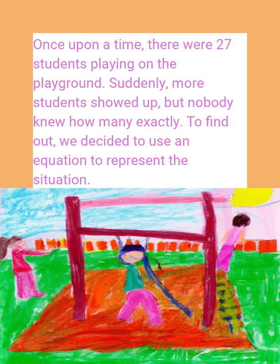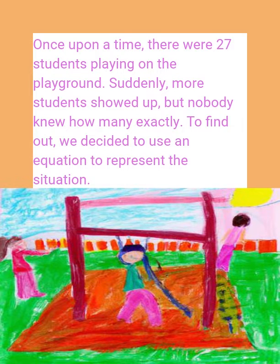Once upon a time, there were 27 students playing on the playground. Suddenly, more students showed up, but nobody knew how many exactly. To find out, we decided to use an equation to represent the situation.